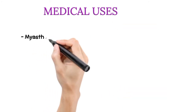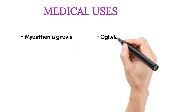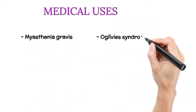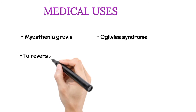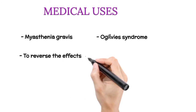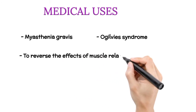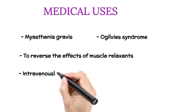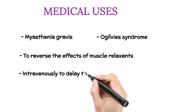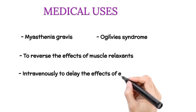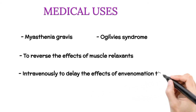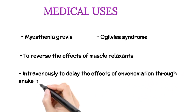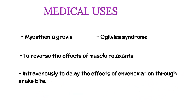Medical Uses: Myasthenia Gravis, Ogilvie's Syndrome, to reverse the effects of muscle relaxants, and intravenously to delay the effects of envenomation through snake bite.